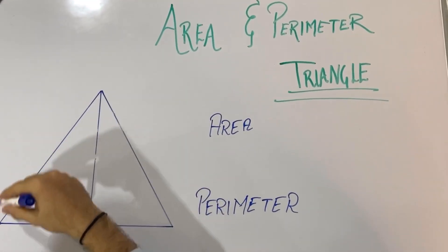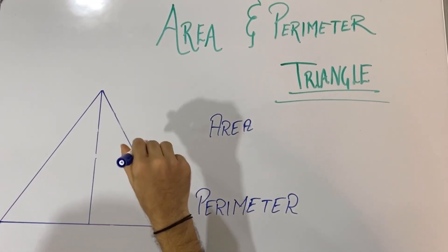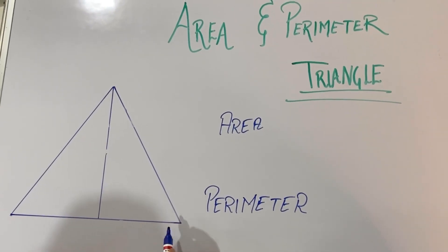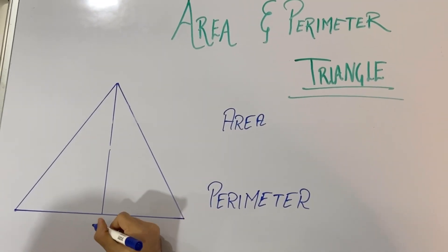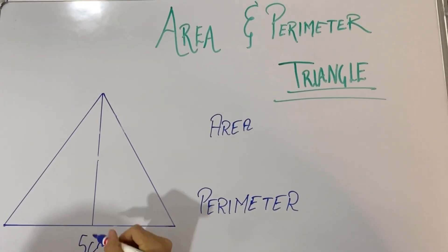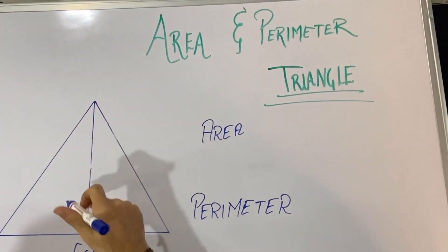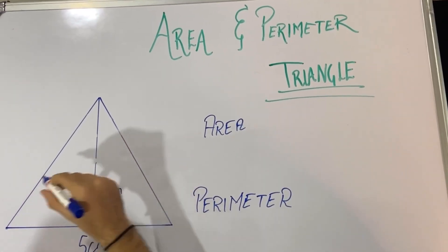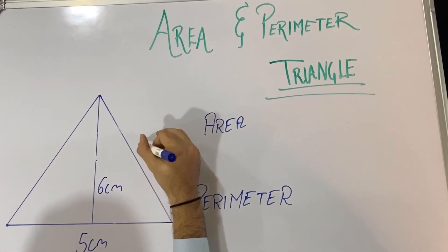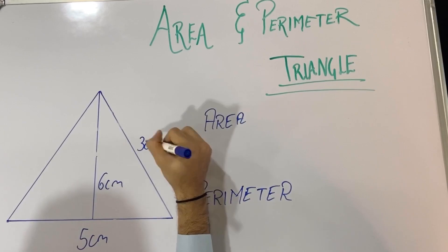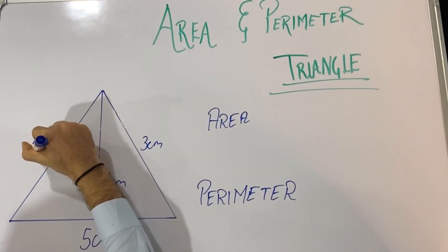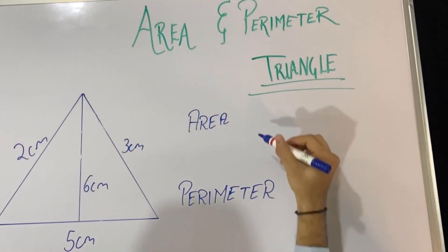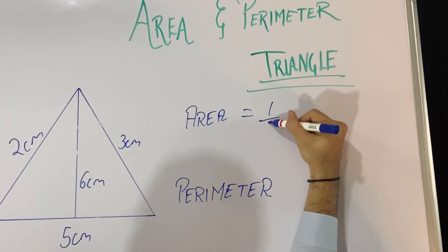Now the triangle. Area is the inner portion and perimeter is the sum of all the sides. This is the base — let's assume base as 5 centimeter. This is the height — let's assume height as 6 centimeter. These are the two other sides; let's assume one as 3 centimeter and one as 2 centimeter.